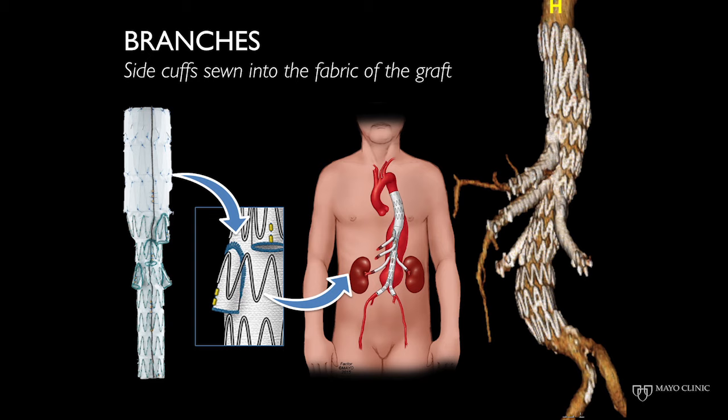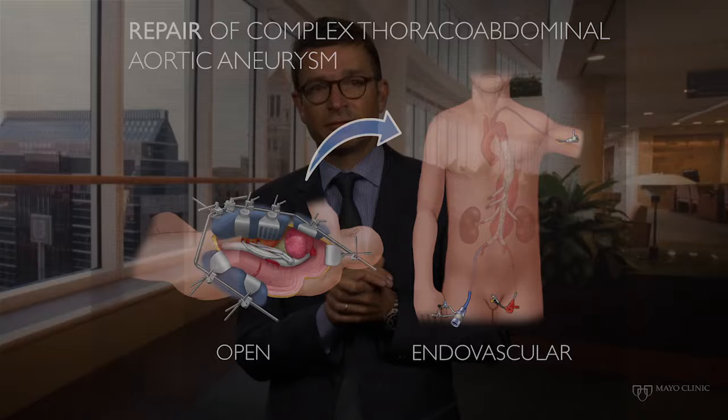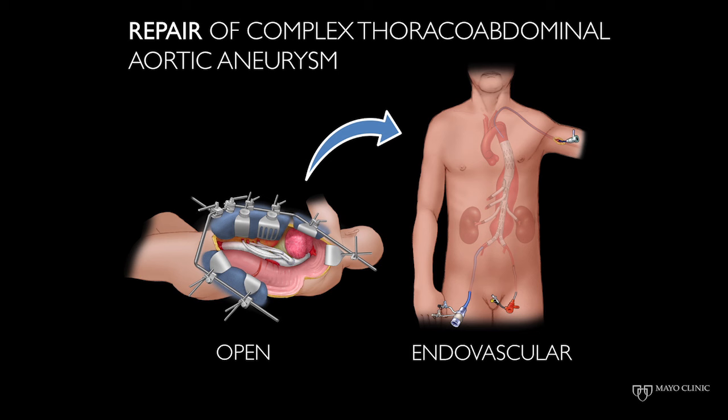All these stents are built upon a very time-tested platform that we have been using for over 15 years. A specific advantage of the fenestrated and branch stent graft is that it avoids the need for a large incision and interruption of blood supply to the kidneys and intestine, which is needed with open repair. Instead, circulation is maintained to these organs during the entire procedure. Several studies already demonstrate that the risk of death and life-threatening complications is decreased as compared to open repair.